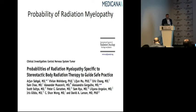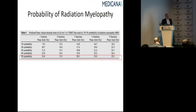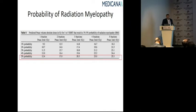Arjun Sahgal from Toronto published a paper collecting all spinal myelopathy cases and calculating the probability of spinal cord myelopathy after radiosurgery. During our radiosurgery planning, we use this to look at the maximum point dose to the spinal cord and can discuss with patients the specific myelopathy probability for their treatment.